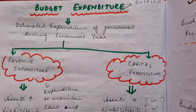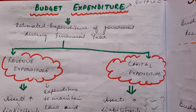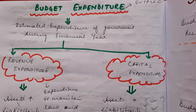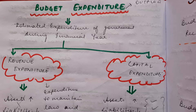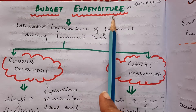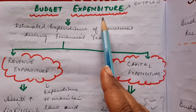Namasibai students, we will be continuing with the chapter on government budget. In a previous class we discussed what a budget is and seen that it has two components: budgeted receipts and budgeted expenditure. We discussed budgeted receipts in detail — how they are divided into revenue receipts and capital receipts, and the difference between them. Today we will be discussing budget expenditure.